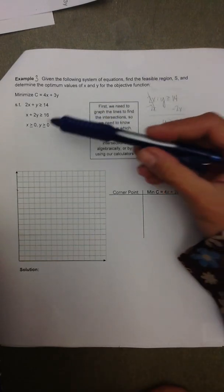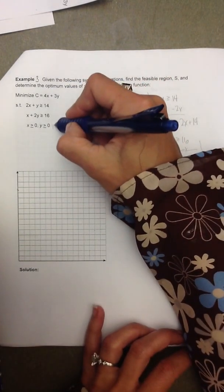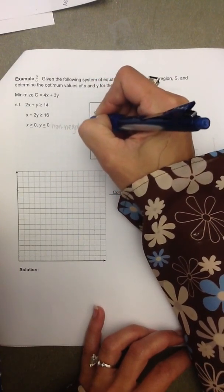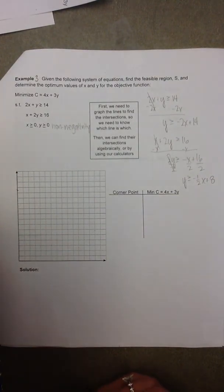And then the other two constraints that we have written here are non-negativity constraints that generally accompany every linear programming problem.